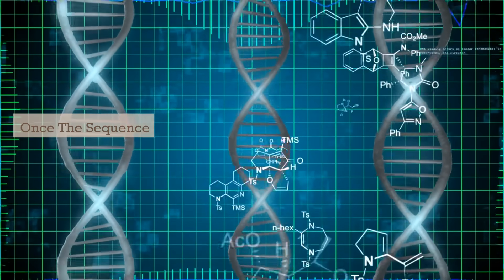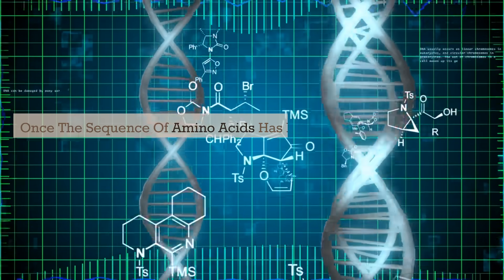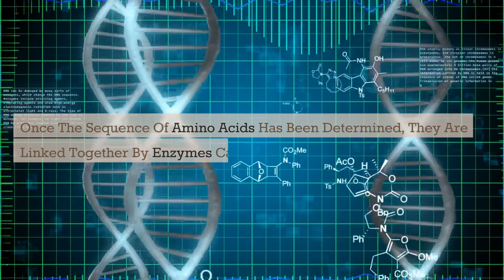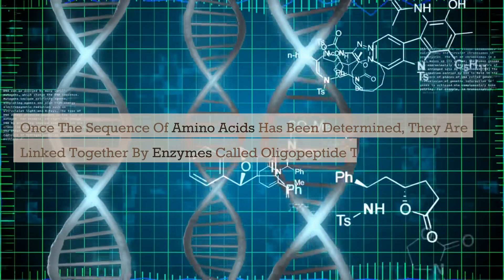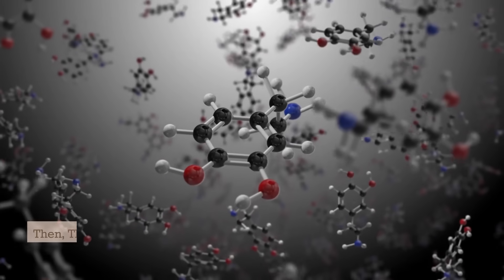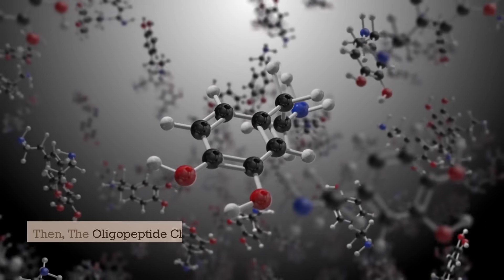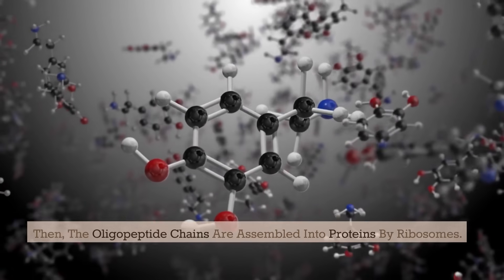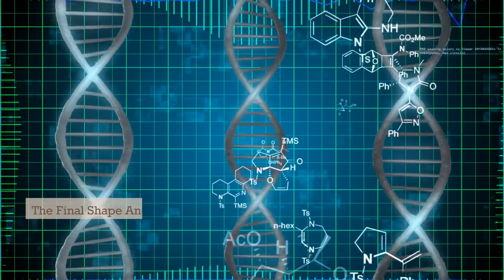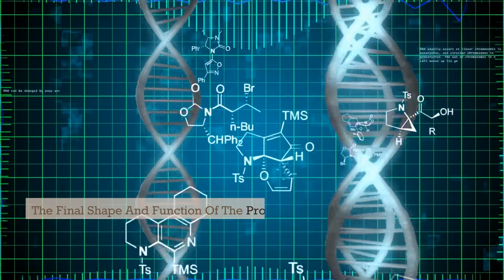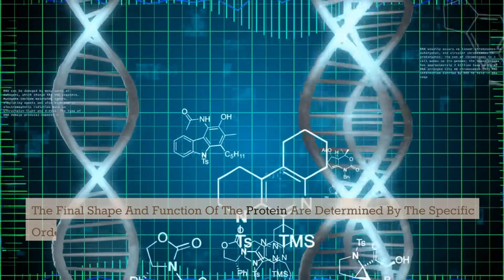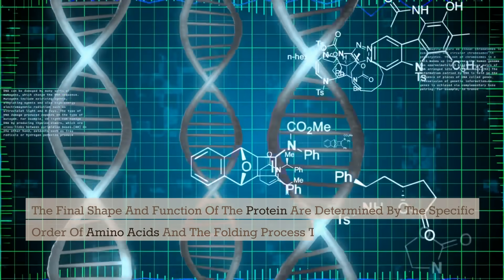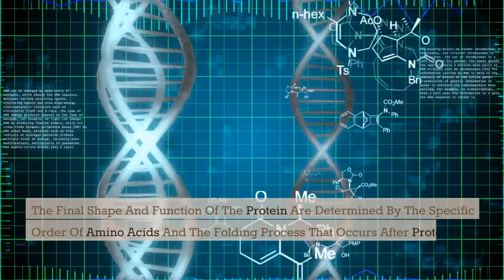Once the sequence of amino acids has been determined, they are linked together by enzymes called oligopeptide transferases. Then the oligopeptide chains are assembled into proteins by ribosomes. The final shape and function of the protein are determined by the specific order of amino acids and the folding process that occurs after protein synthesis.